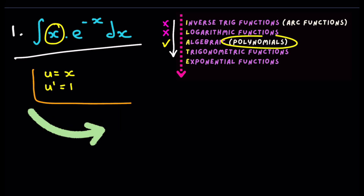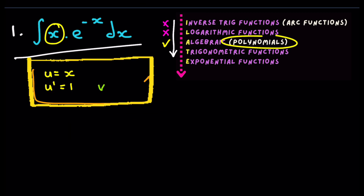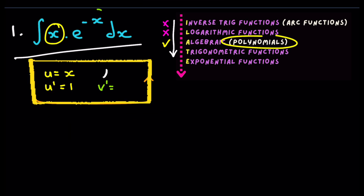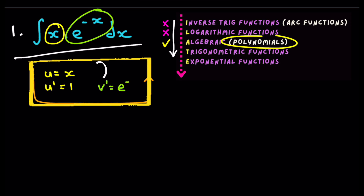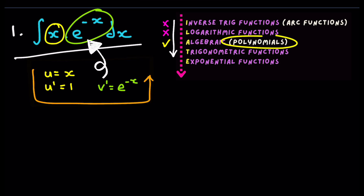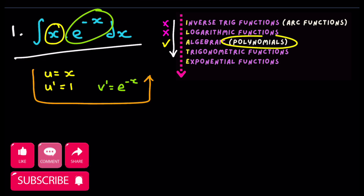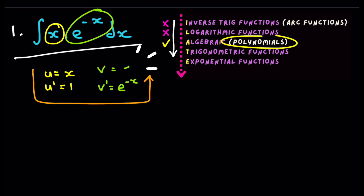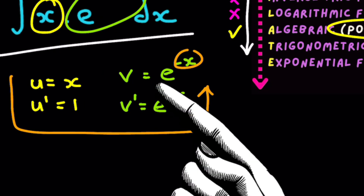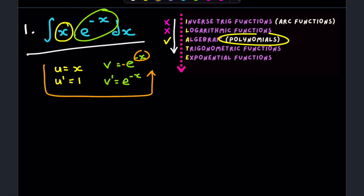I like to work in an anti-clockwise direction here. As soon as we found u prime, we jump over to v prime, which will be the other expression — that's e to the minus x. We need to integrate that to get v. When we integrate e to the minus x, we get e to the minus x divided by the derivative of that power, which is minus one. Now we plug all of this into the integration by parts expression.